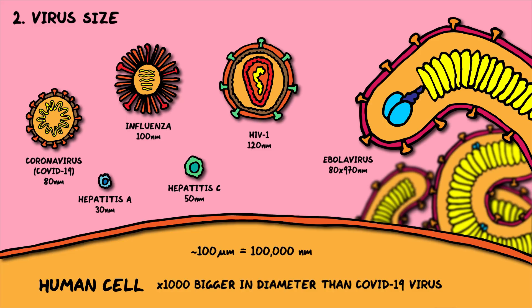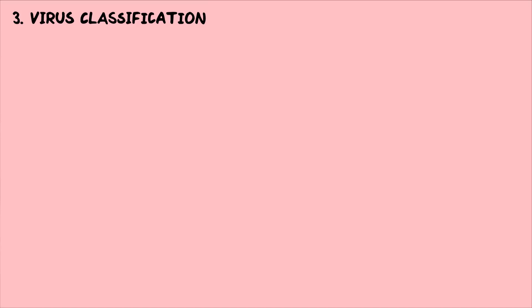For some viruses, their genome is really small, coding for just two proteins. But other viruses code for up to 2,500 proteins for the largest genomes. There are a few ways to classify viruses. The genome of a virus is either based on DNA or RNA, and is either single-stranded or double-stranded.